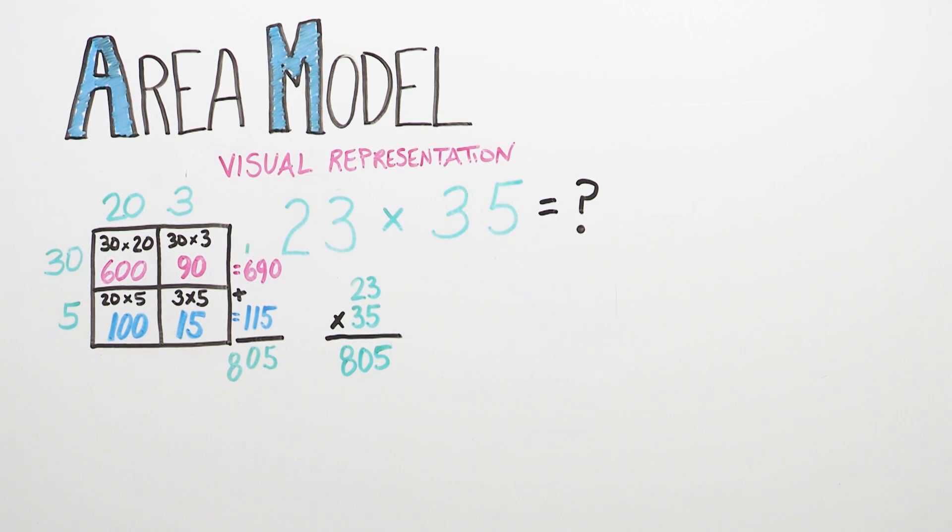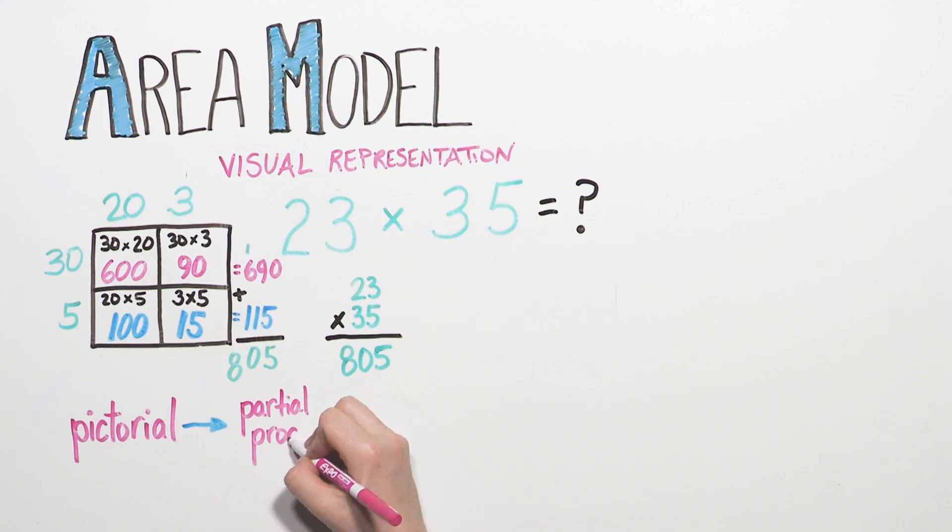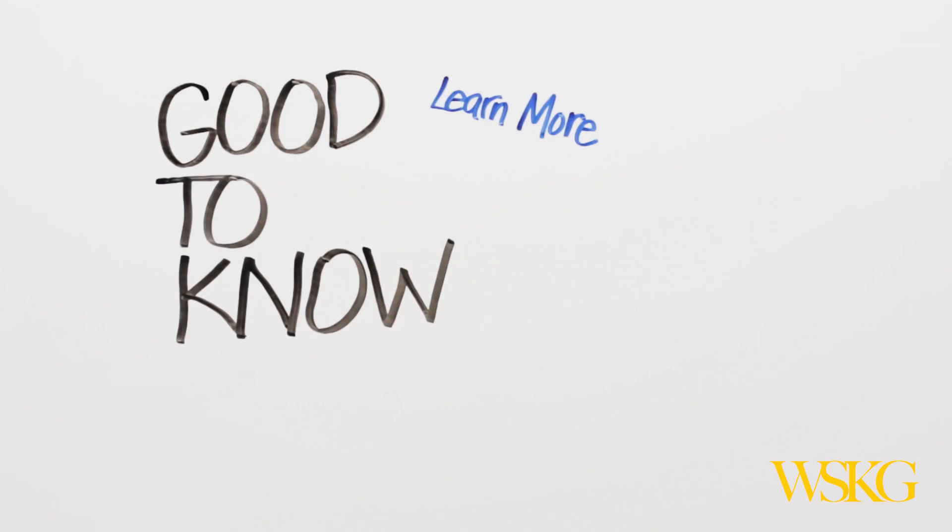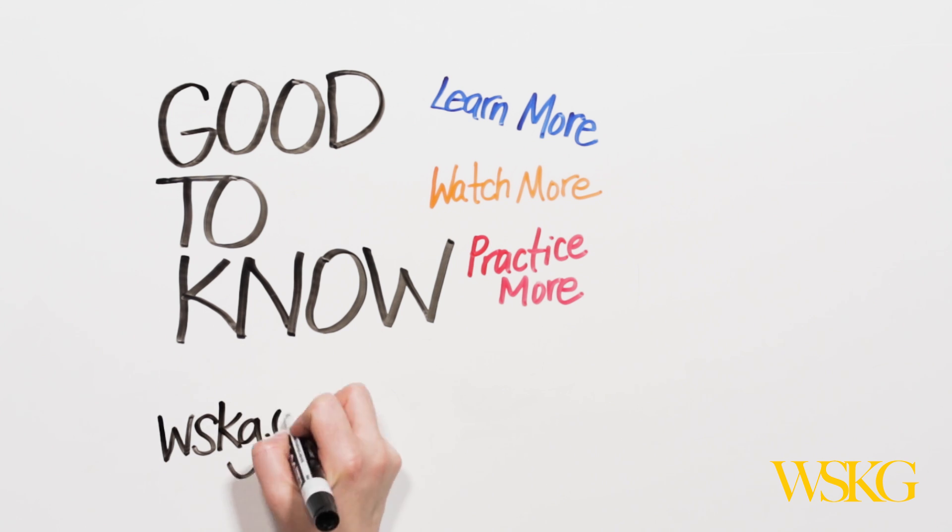The area model gives your child a visual representation that decomposes the numbers she is multiplying. At this point in fourth grade, your child is developing a pictorial level of understanding, which will give her a strong foundation for using partial products and, later, using the standard algorithm to multiply. And that's good to know.